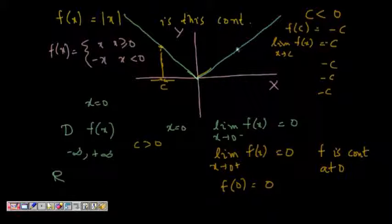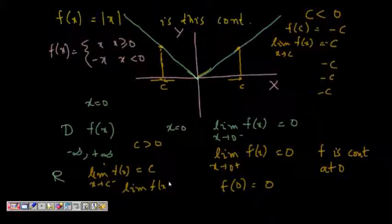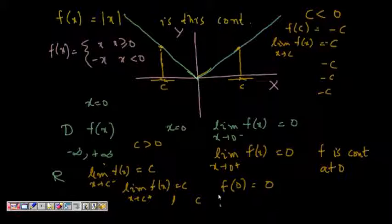Similarly, if c is greater than zero, the left-hand limit of f(x) as x tends to c minus equals c, the right-hand limit as x tends to c plus also equals c, and f(c) = c as well. Hence, f is continuous everywhere on the real number line. I hope you understand — thanks a lot.